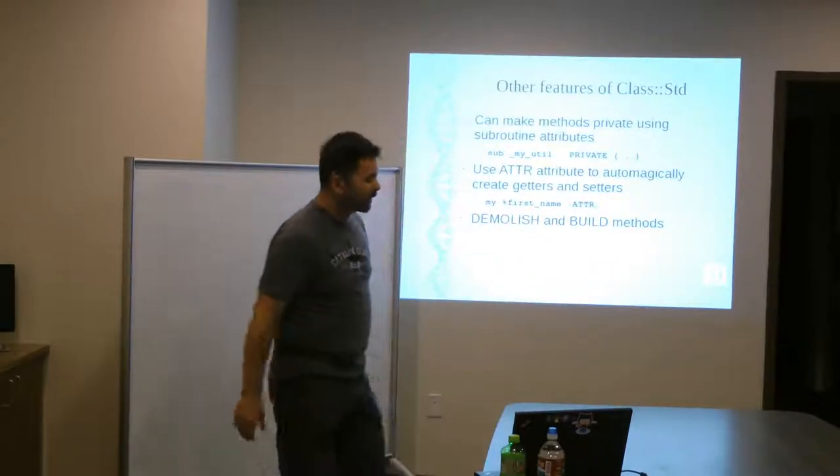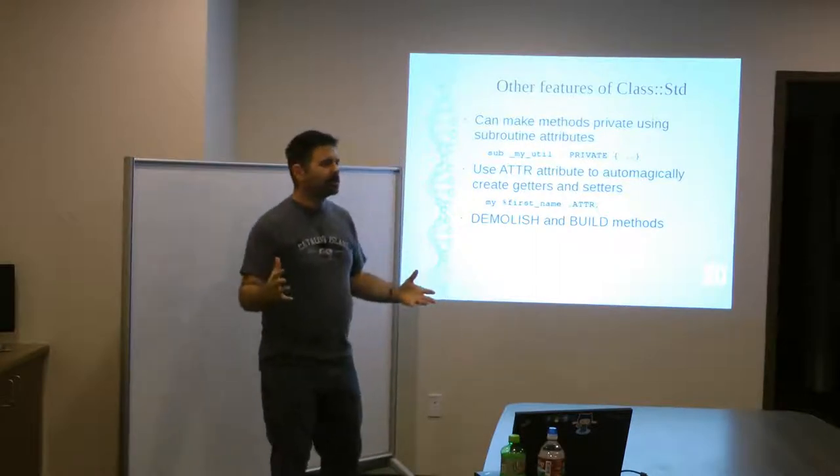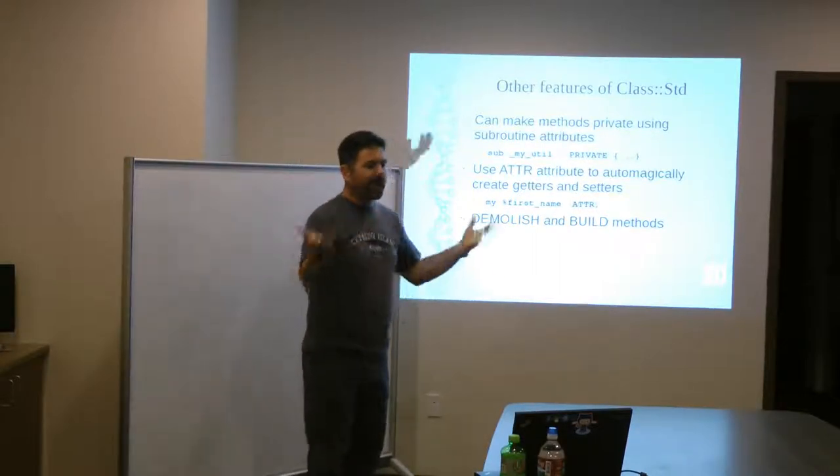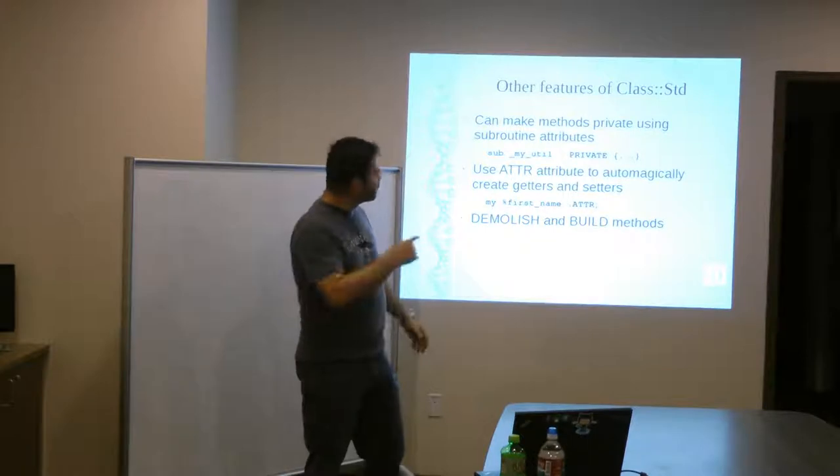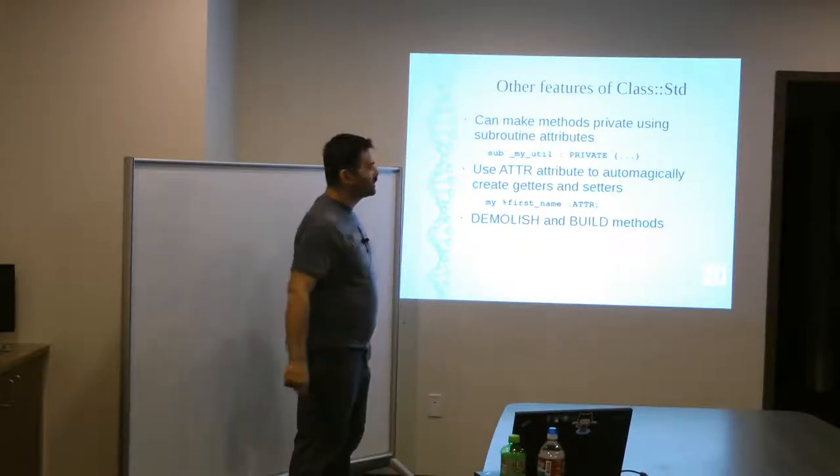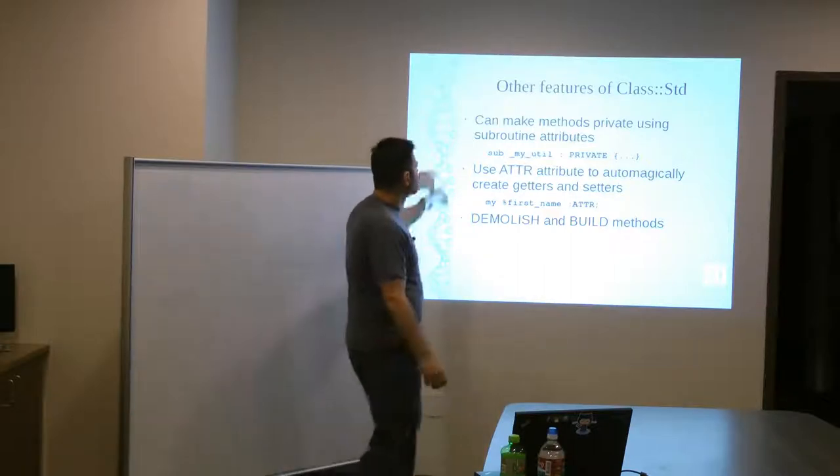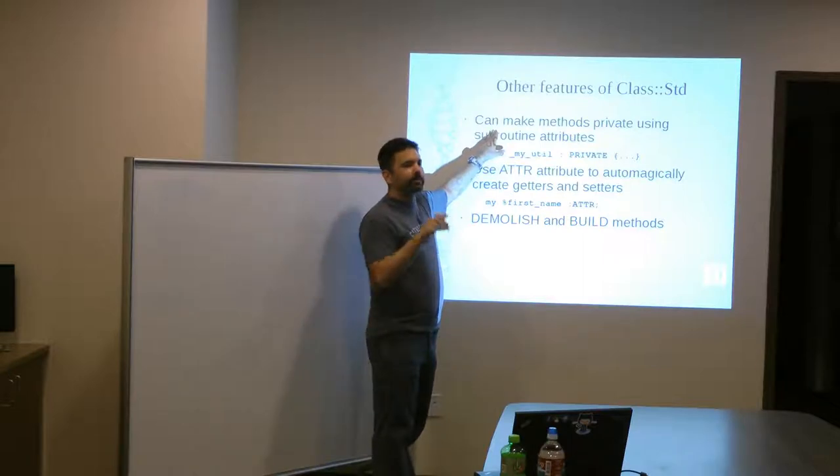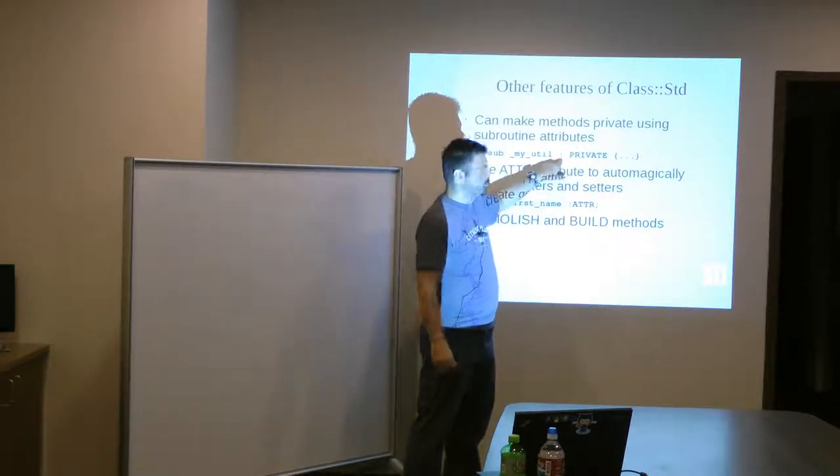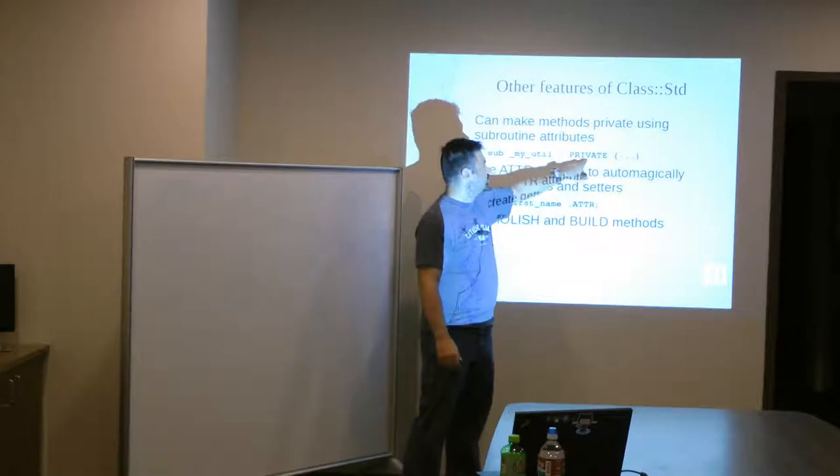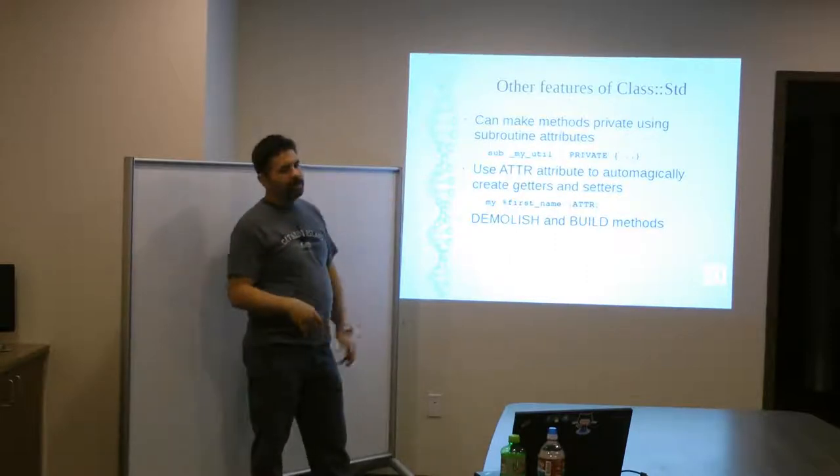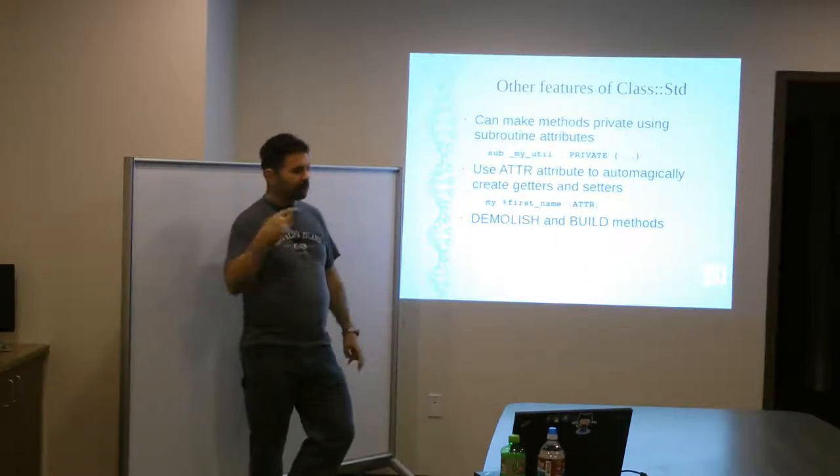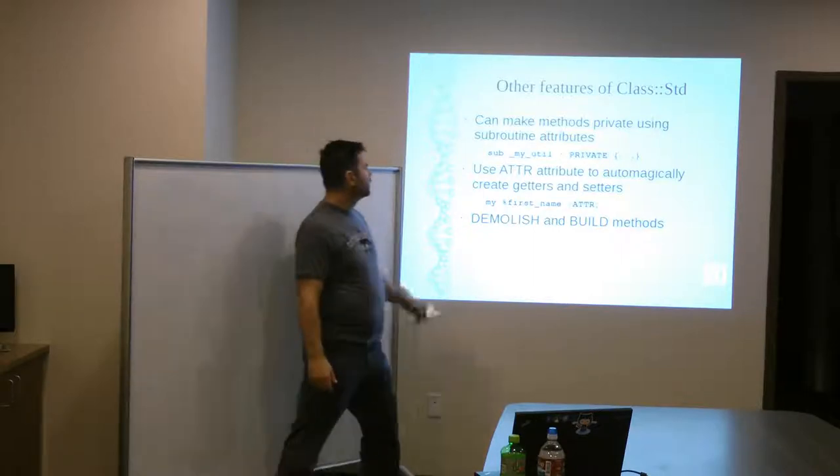Okay, so some other features of class STD. So, the original inside out method, the strategy that Damien talked about in Perl Best Practices was pretty simple as to what I just described. But he's added some stuff since then in the class STD that make things a little easier. For example, you can declare, you can make your methods private, so they can only be called from other methods inside your package by adding this attribute. So, when you declare your subroutine, you can say colon private in your subroutine declaration. And by doing that,